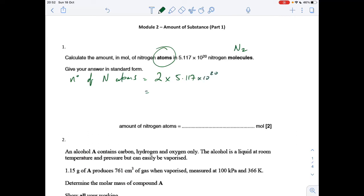So that equals 1.0234 times 10 to the 21 atoms. So the number of moles is the number of atoms, 1.0234 times 10 to the 21, divided by Avogadro's number, and in standard form that's 1.7 times 10 to the minus 3.